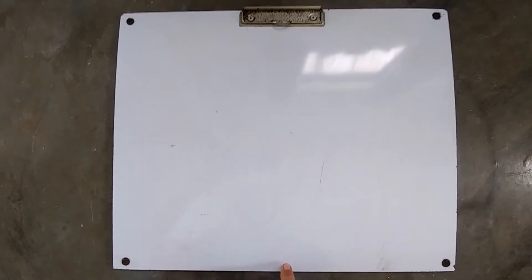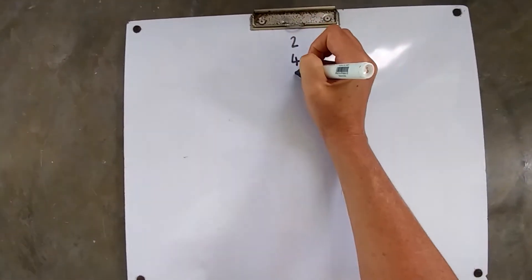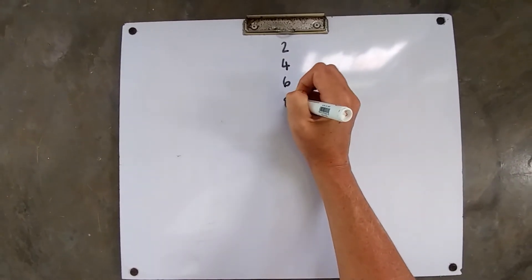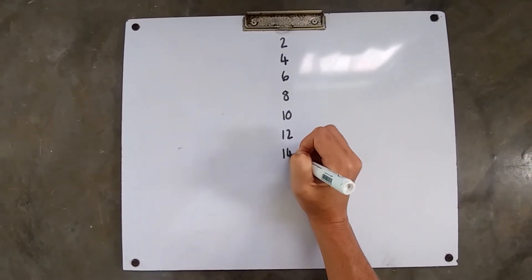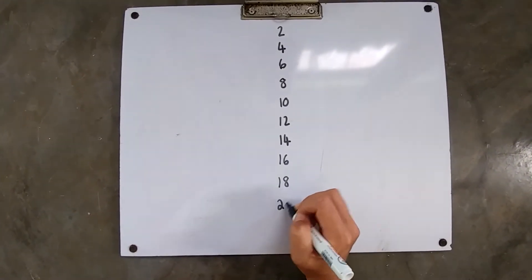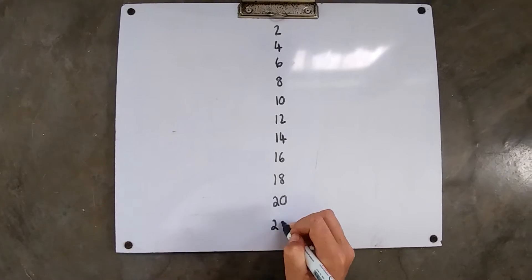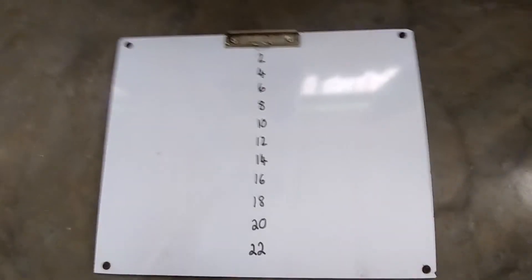So I want you to start on your page by drawing your two times table down the line. Let's see how far can I get? 2, 4, 6, 8, 10, 12, 14, 16, 18, 20, 22. That's about as far as I can get. See how far you can get.